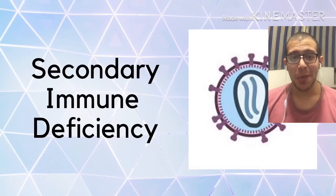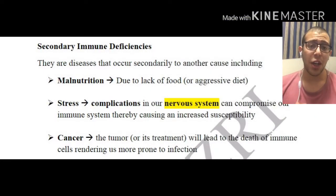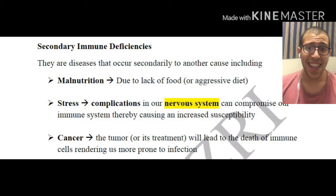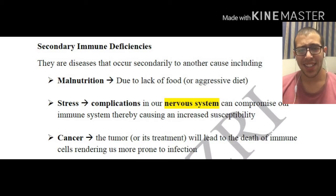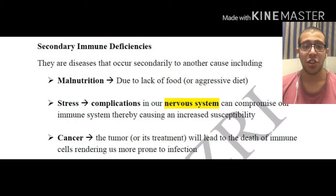Hello everyone, grab your pen and paper and let's talk about secondary immune deficiencies. In this lecture we're first going to give an overview of what secondary immune deficiencies are, then give a detailed example of a disease caused by this deficiency — AIDS — and get into the mechanism of how it works with examples.